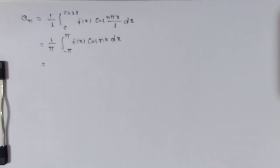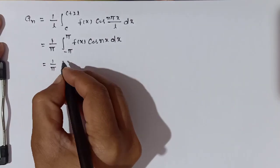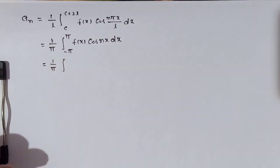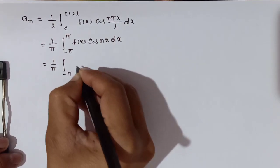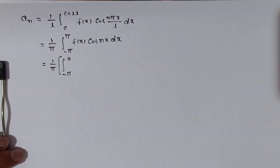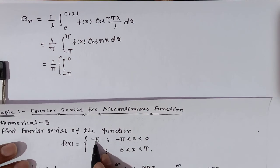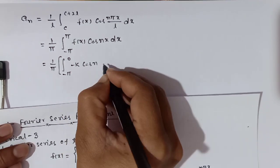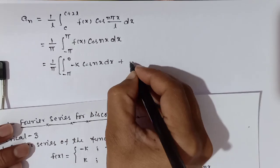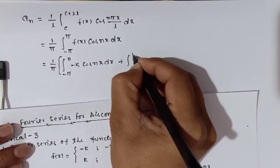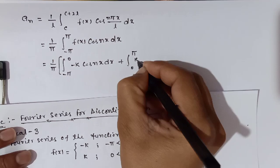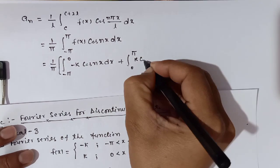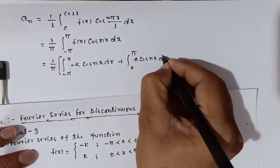Now we break the limit. So we get 1/π times: integration from -π to 0 with function value -k, giving -k·cos(nx) dx, plus integration from 0 to π with function value k, giving k·cos(nx) dx.